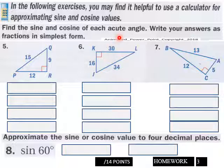And then down here, approximate the sine or cosine value to four decimal places here. You got sine 60, approximate the sine or cosine. This just asks for the sine, but if you want a little extra credit, throw in the cosine of 62. Okay, and you got 14 points here, page three.